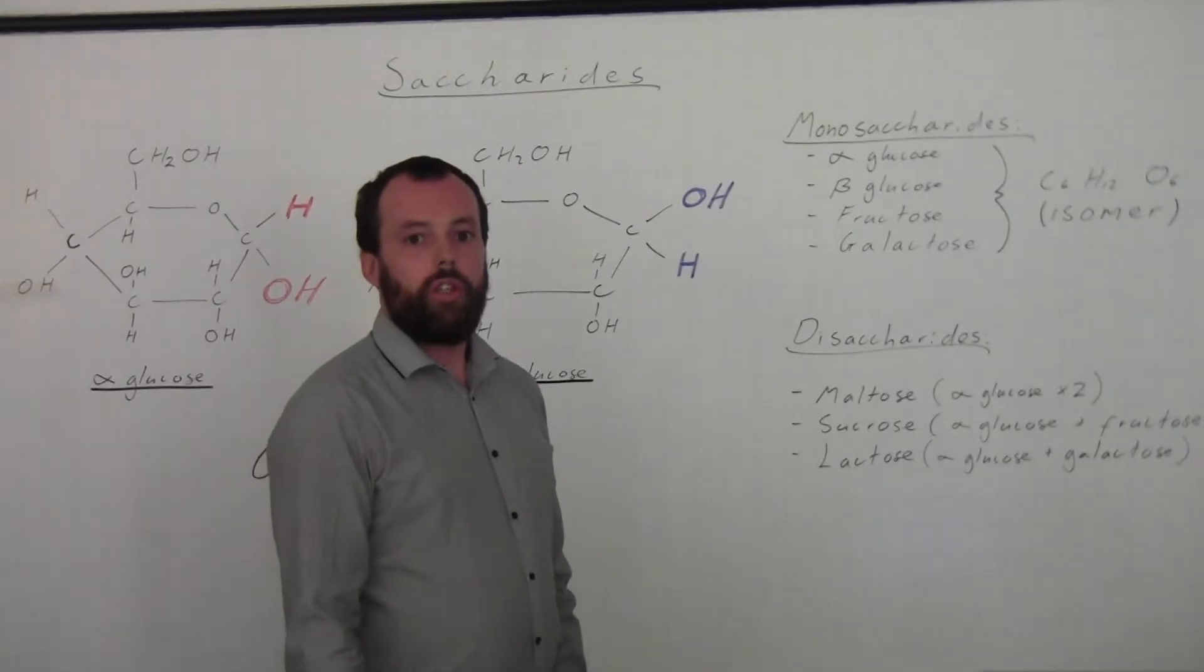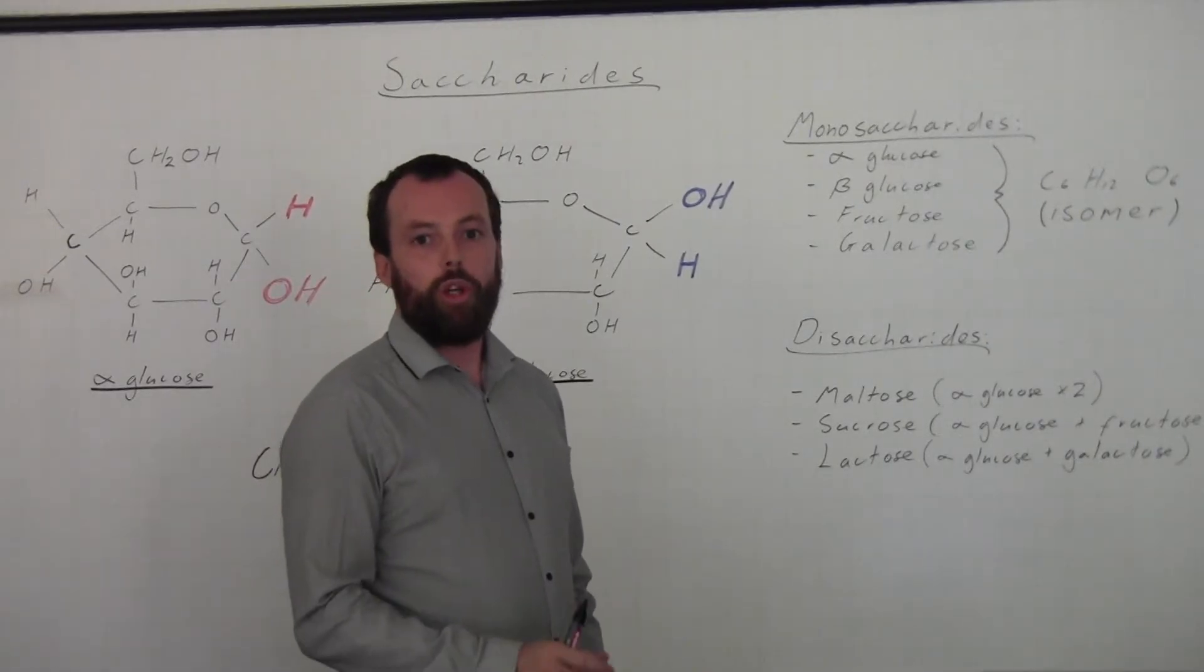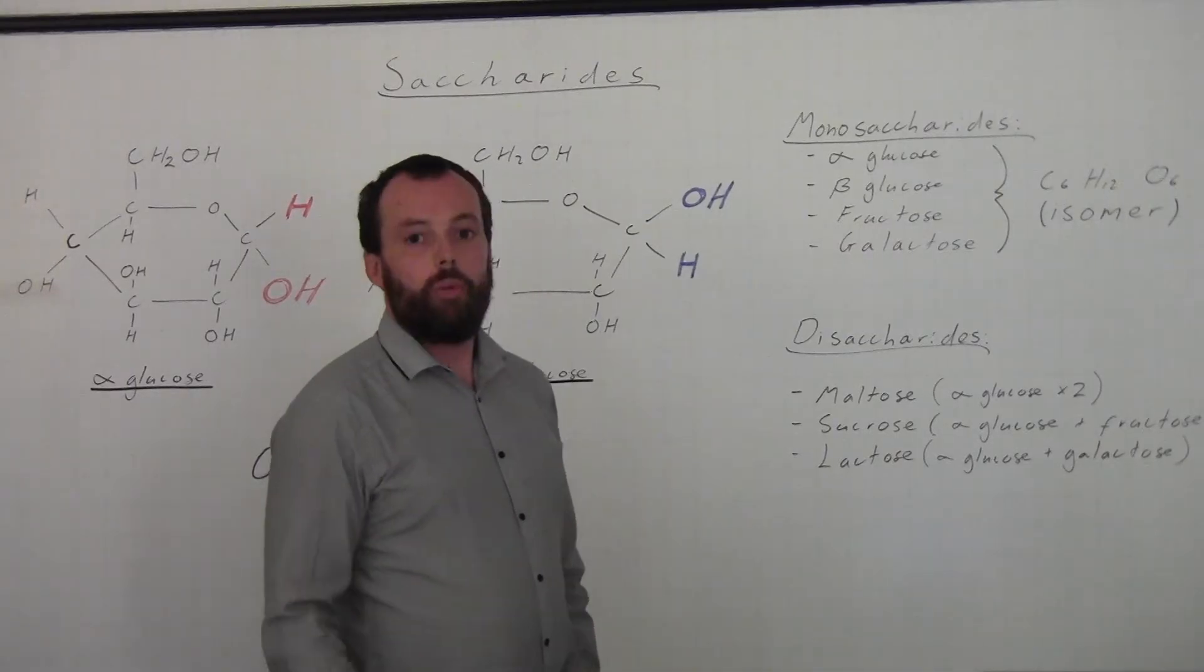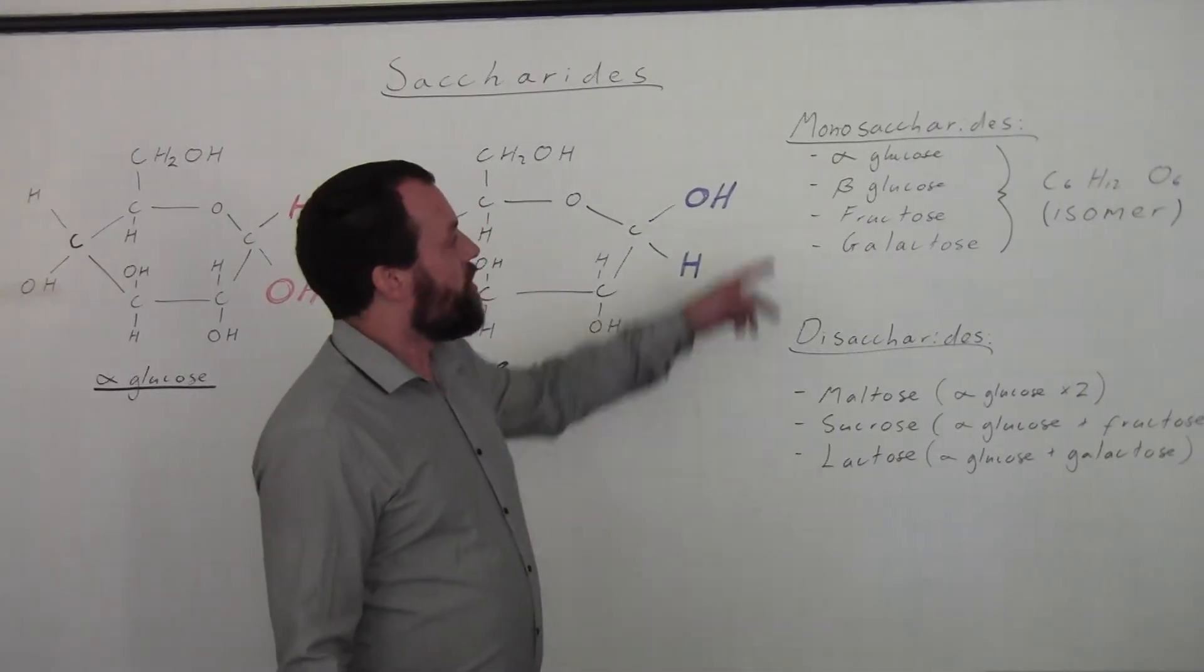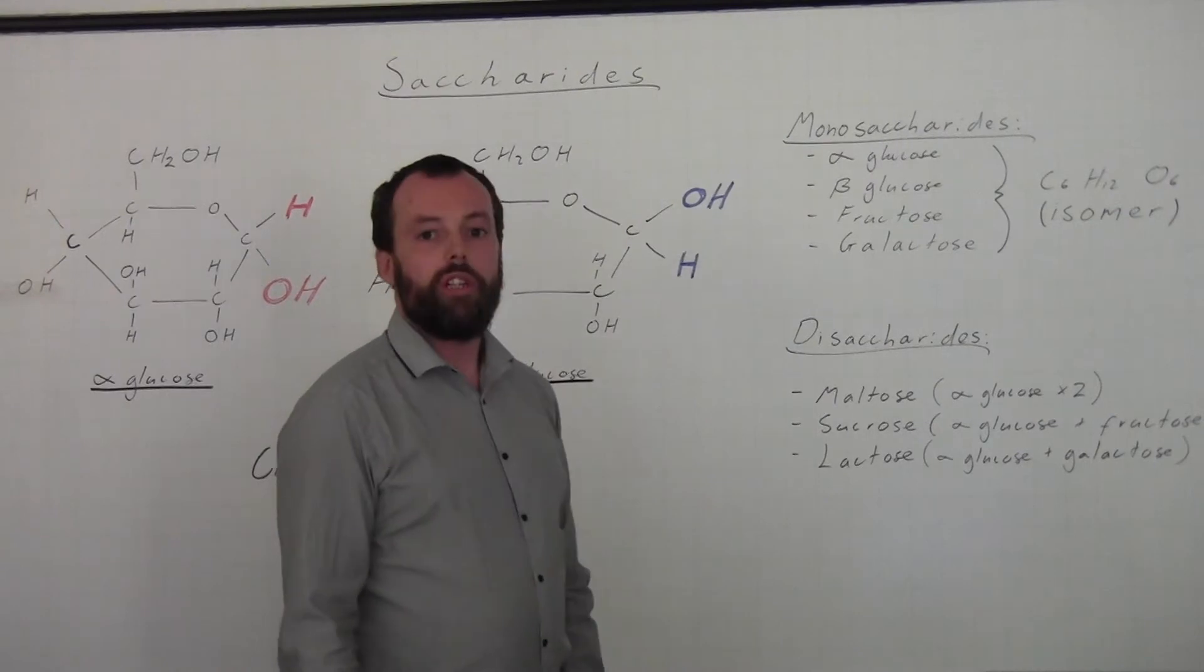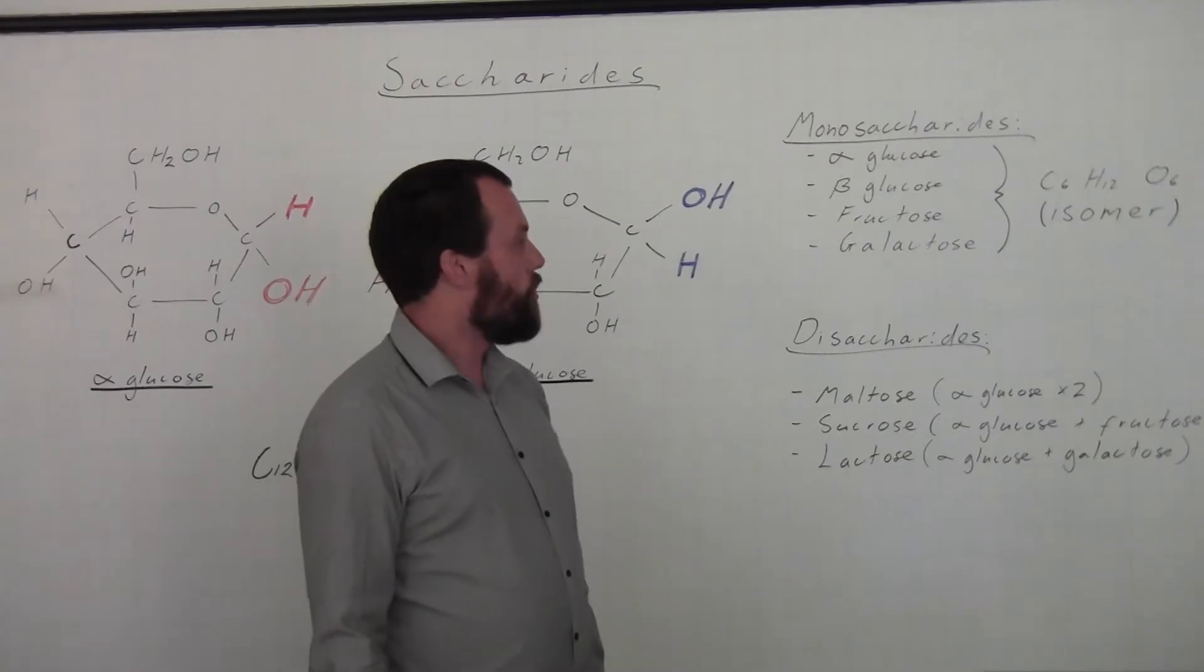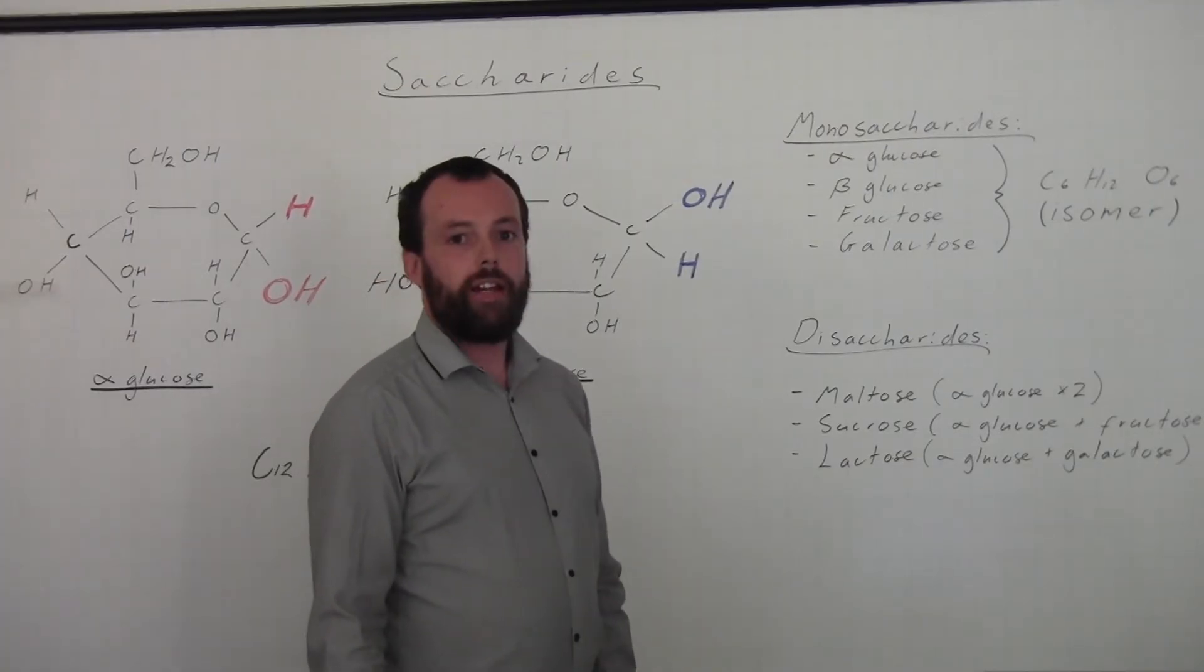Saccharides are sugars. Each monomer, each single block, each monosaccharide - we see there are four types. The four types of monosaccharide that we need to know about are alpha glucose and beta glucose (glucose comes in two forms), fructose, and galactose.